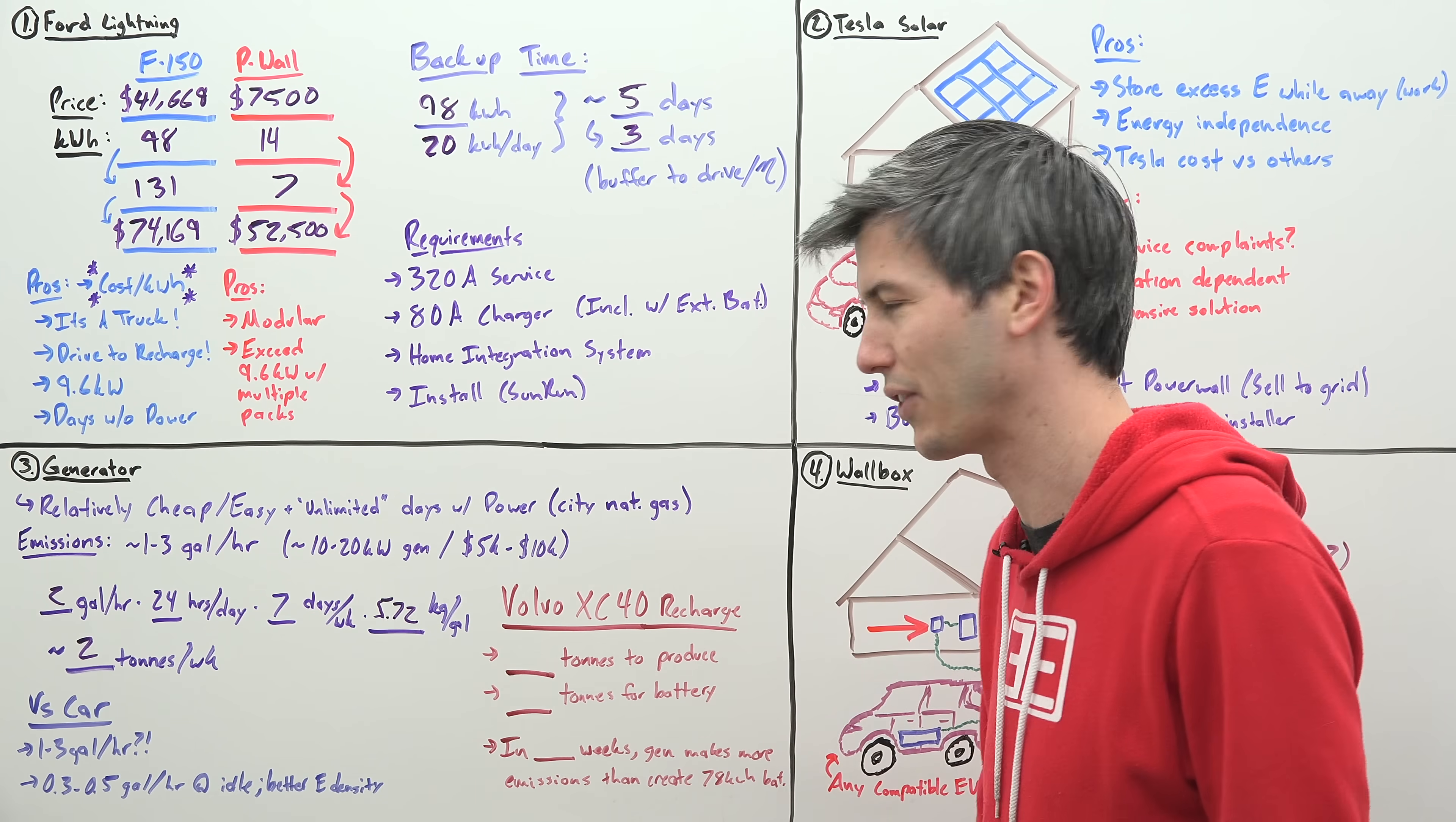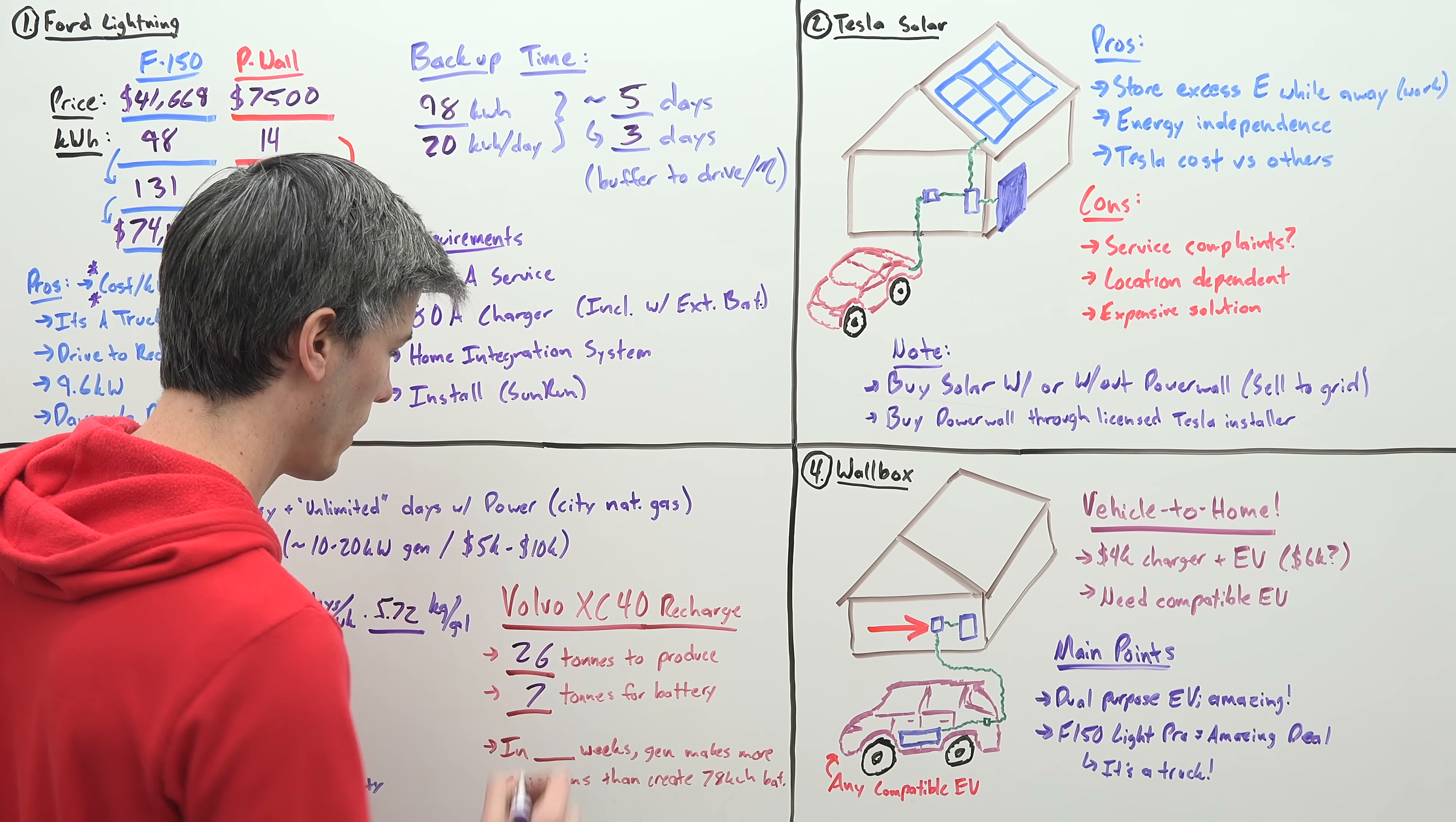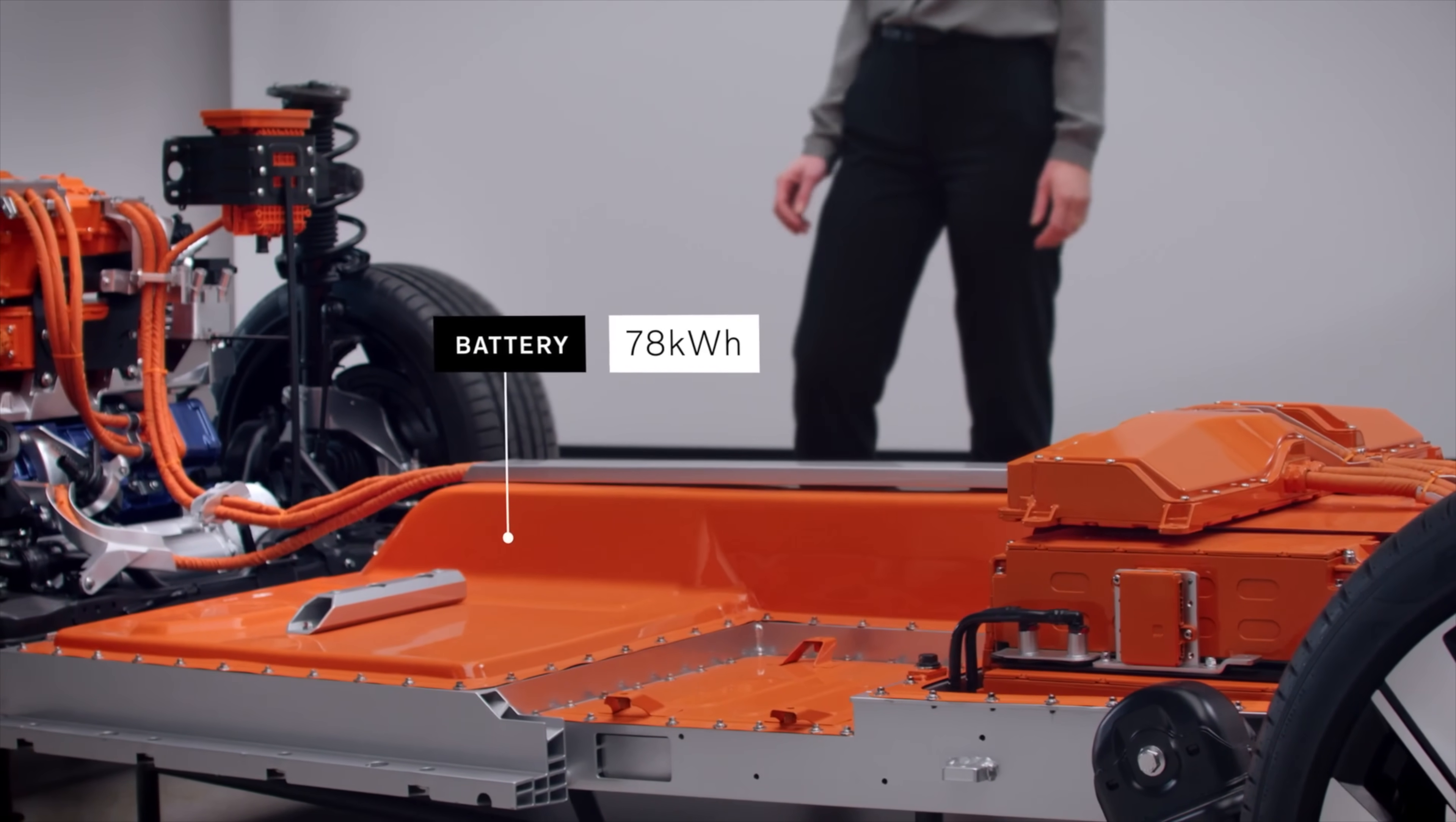So to give you some context for that, Volvo recently published a very cool study looking at the environmental impact of building their own cars. And they said to produce the Volvo XC40 Recharge, which is about a 78 kilowatt hour electric car, it's 26 tons of CO2 to produce. Now, seven tons of that are for creating that battery. So if you think about this, if you have a generator that's producing two tons of CO2 per week, then in four weeks, you've already created more emissions than creating a massive nearly 80 kilowatt hour battery of running that backup.